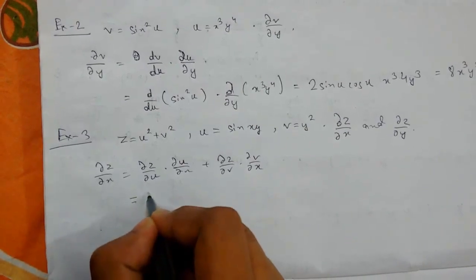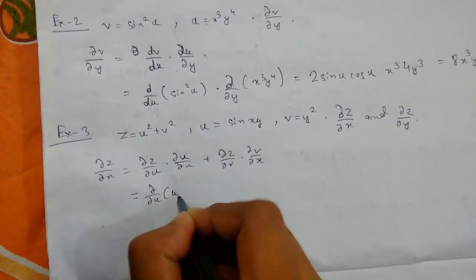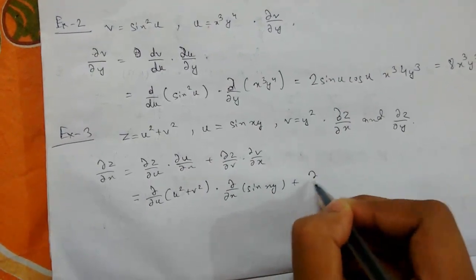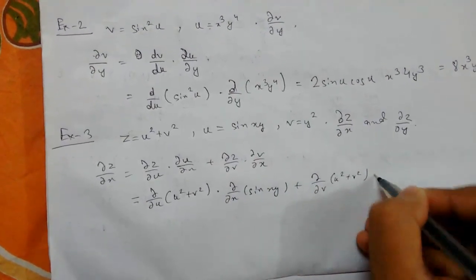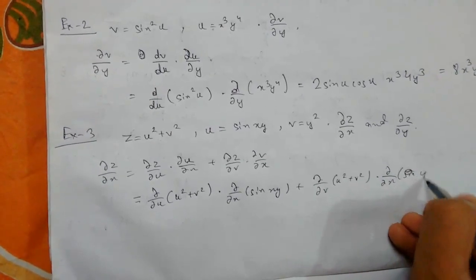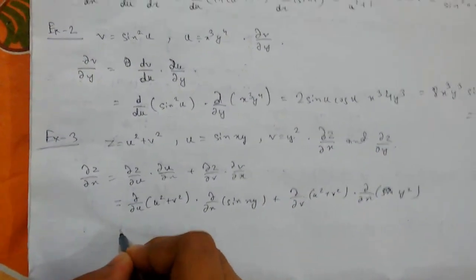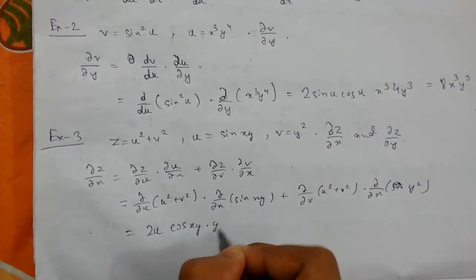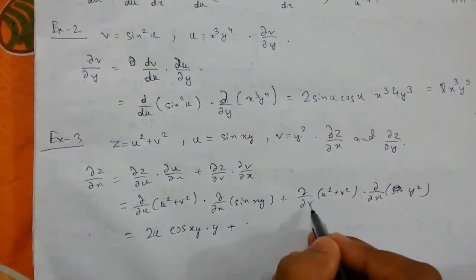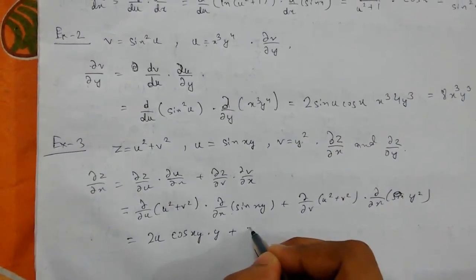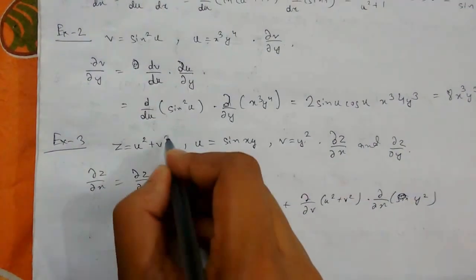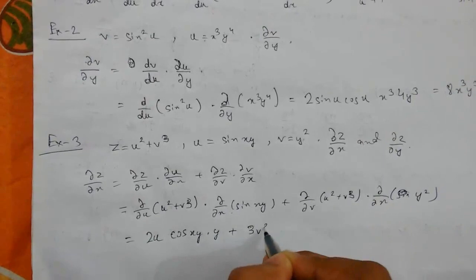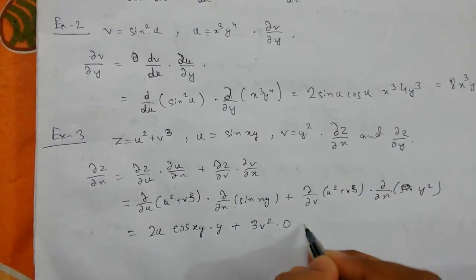Putting the values we get 2u·d/dx(sin(xy)) + 2v·d/dx(y²). This will be 2u·cos(xy)·y + 2v·0 (since y is constant when differentiating with respect to x).